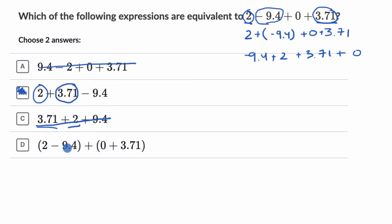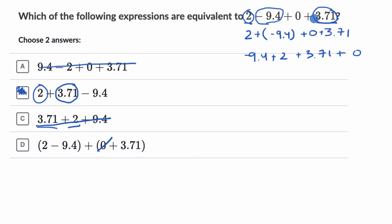And I'm guessing this last one is going to work. It puts parentheses around it, really just telling us what to do first. So it says first do two minus 9.4, which if you just went left to right you would have done anyway, and then plus zero plus 3.71. Zero plus 3.71 is just 3.71, so you get two minus 9.4 plus 3.71. I like that choice.